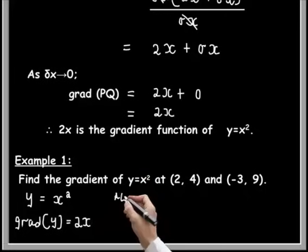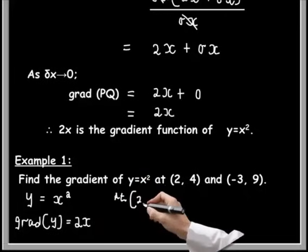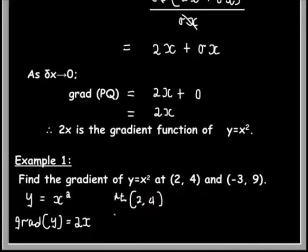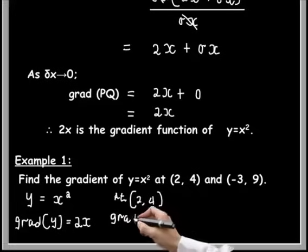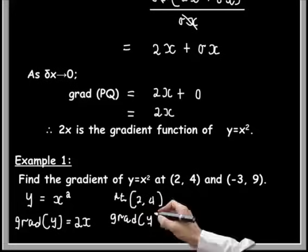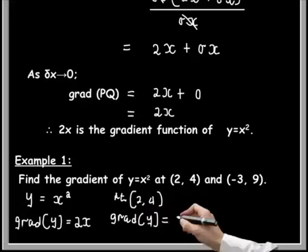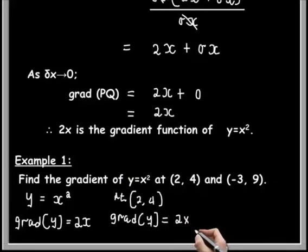So at the first point (2, 4), the x-coordinate of this point is 2. Therefore, we feed 2 into grad y, and that will be 2 times x, which is 2, giving us 4.